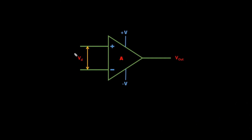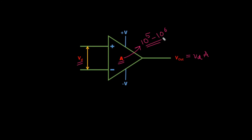Now, if we denote the difference between the two input voltages as Vd, then Vout = A × Vd. Suppose the gain A is in the range of 10^5 to 10^6, which is very high. If Vd is 1 millivolt, then Vout = 1mV × 10^5 = 100 volts at the lowest gain limit.